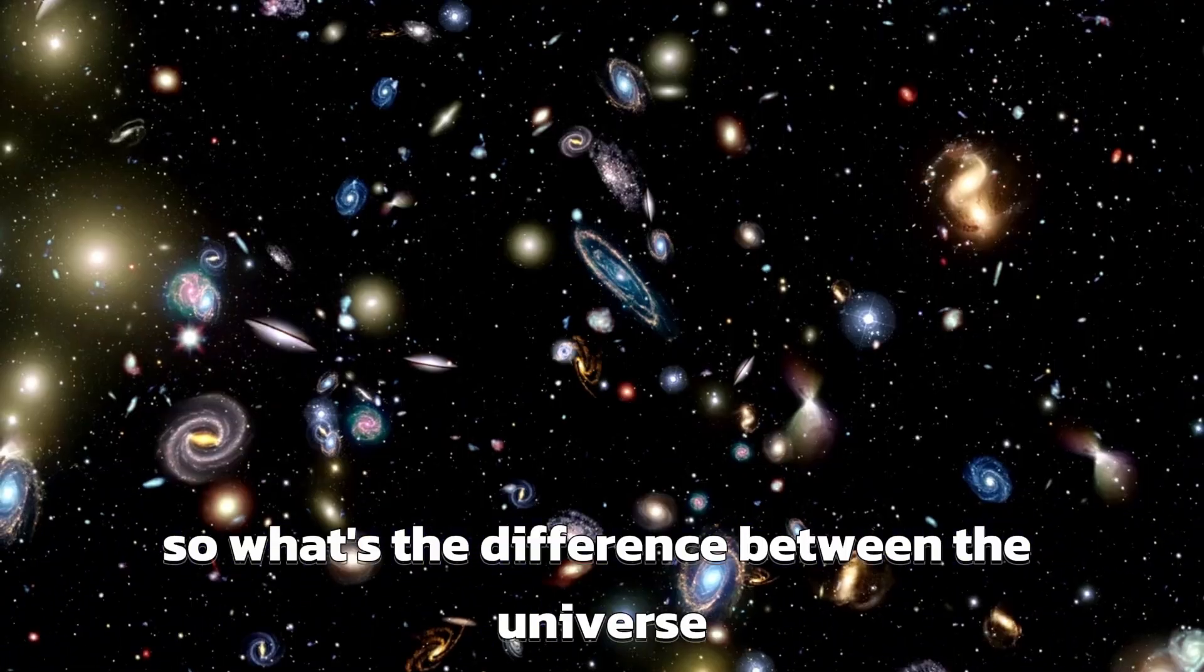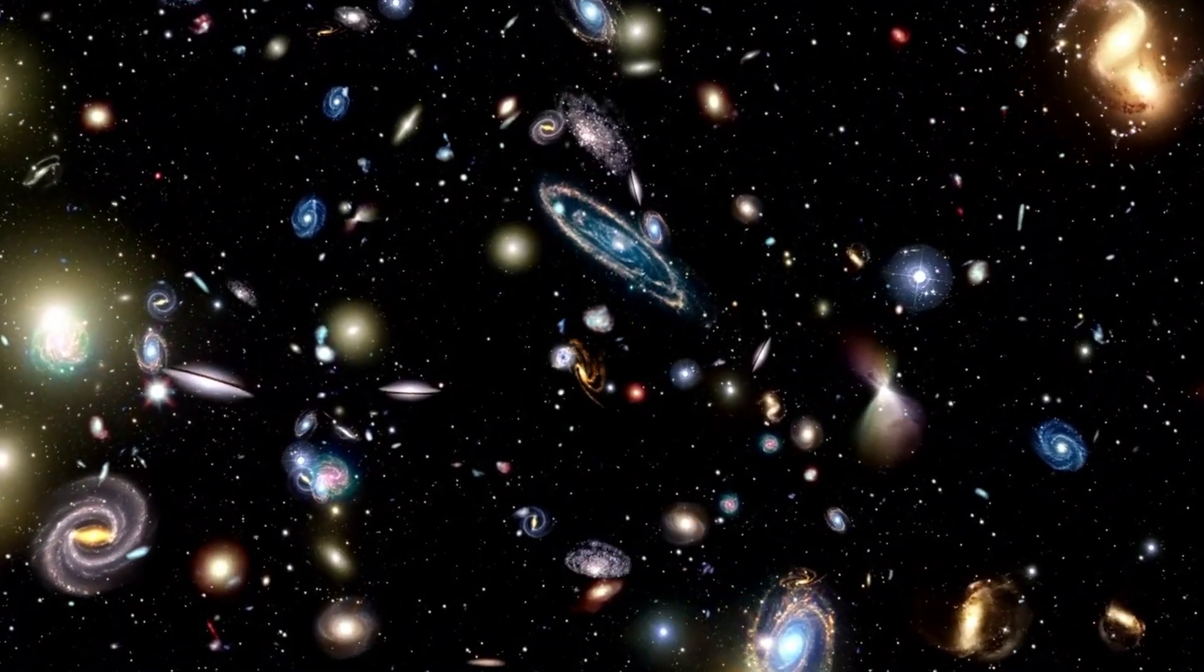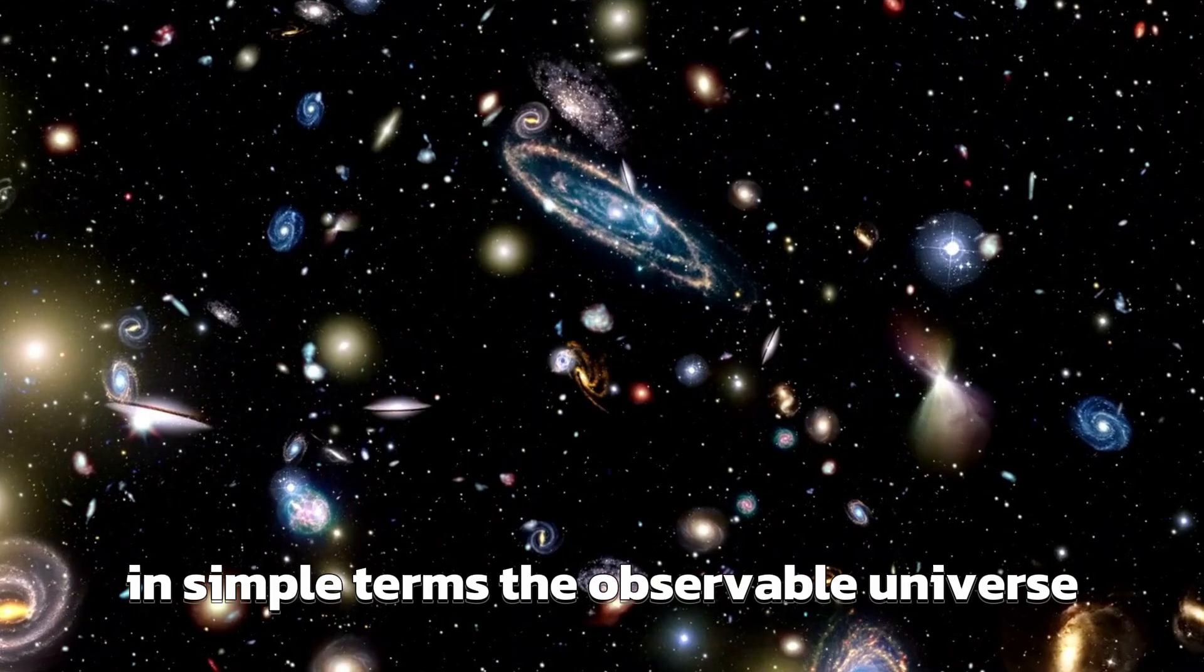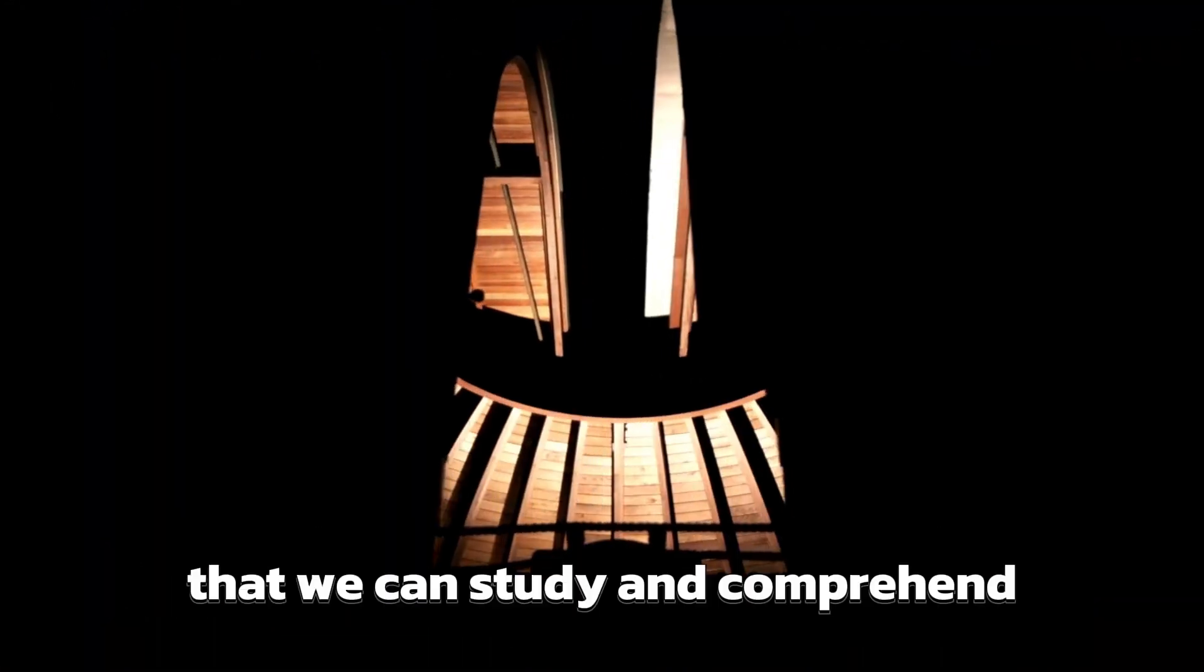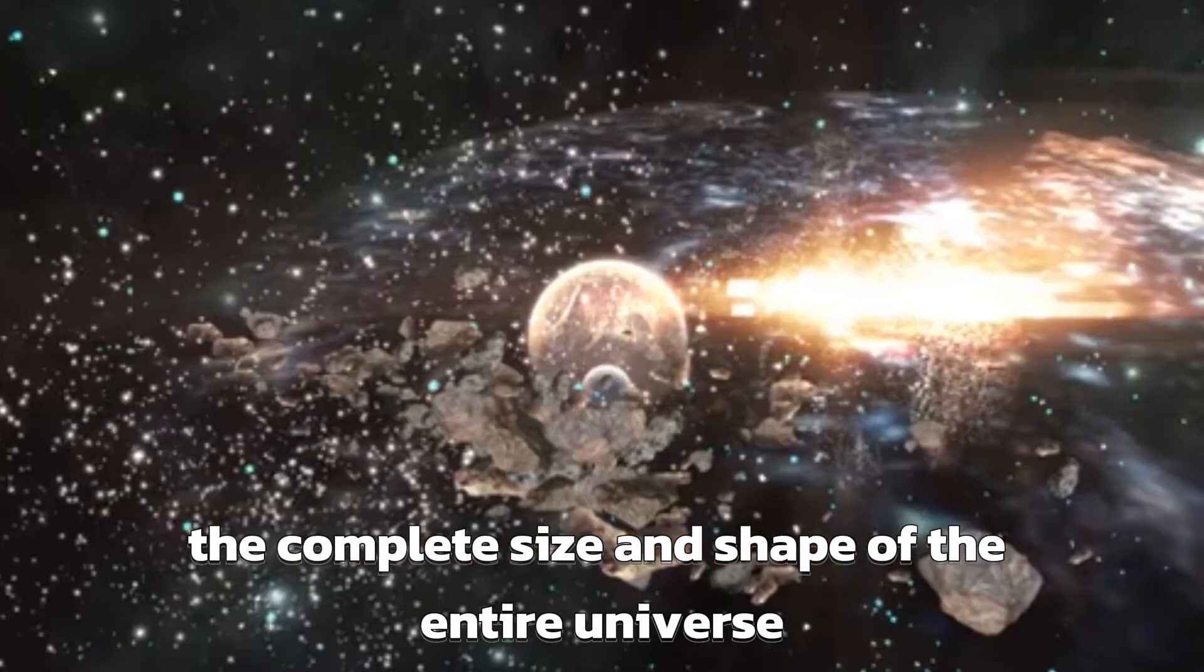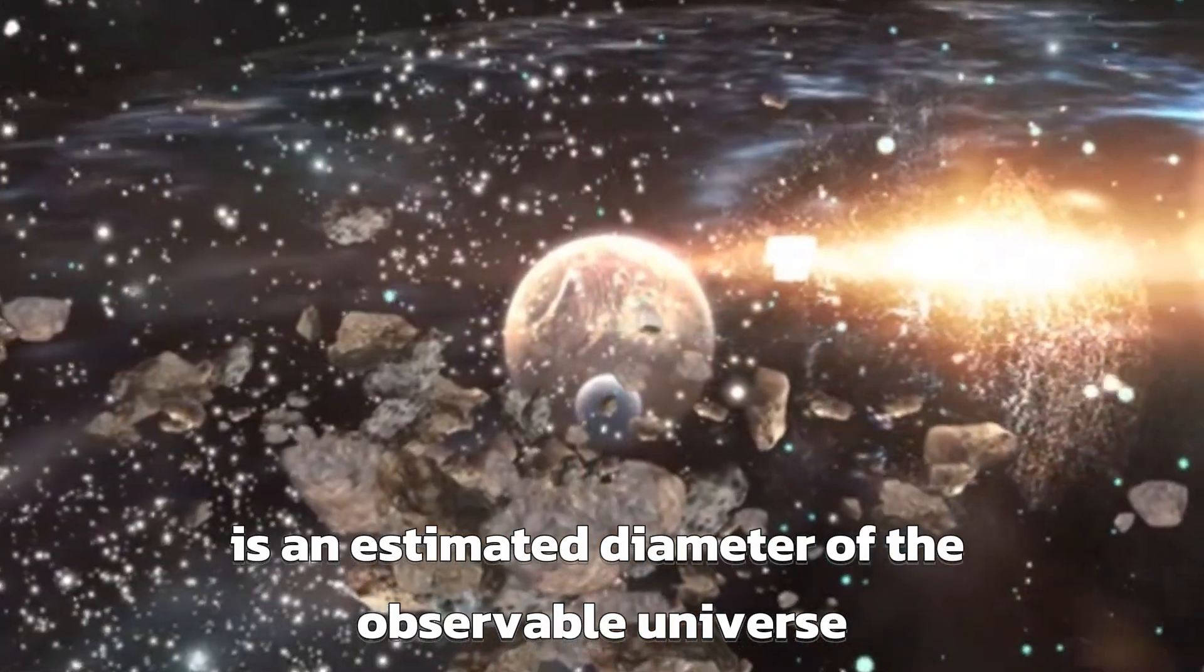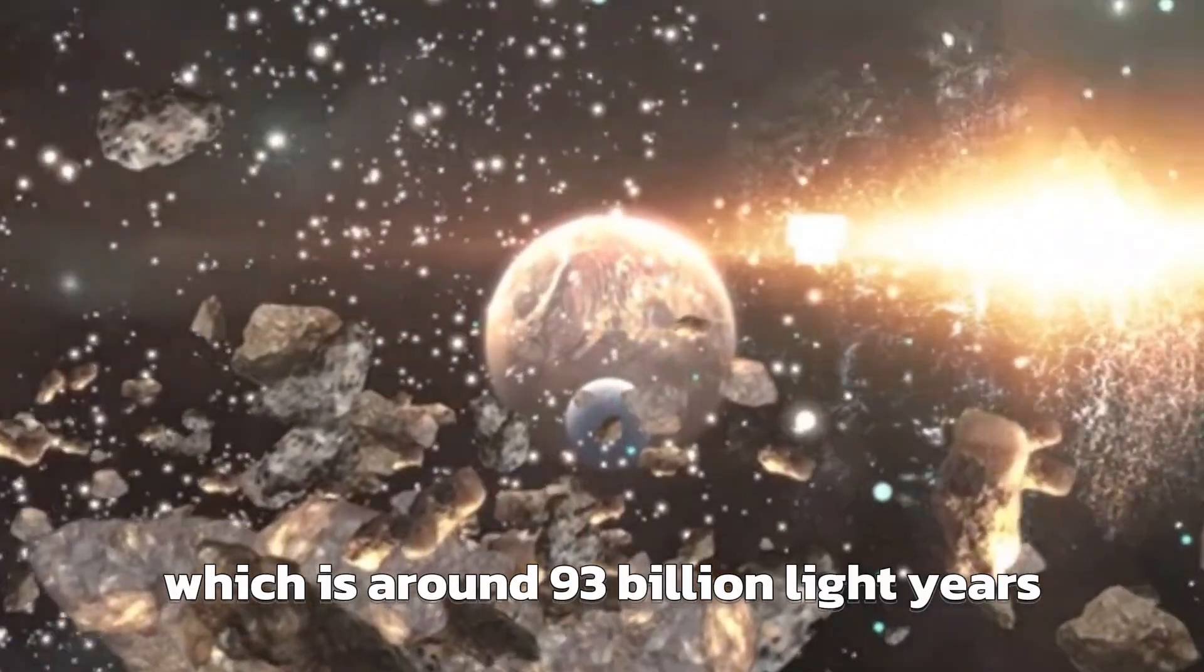So what's the difference between the universe with a capital U and the observable universe? In simple terms, the observable universe is just a small fraction of the entire universe that we can study and comprehend. While the complete size and shape of the entire universe are unknown, there is an estimated diameter of the observable universe, which is around 93 billion light-years.